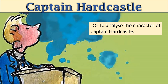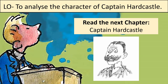Our learning objective today is to analyse the character of Captain Hardcastle. The first thing I need you to do is read the chapter titled 'Captain Hardcastle.' You can see a picture of Captain Hardcastle on this slide. In your copy of Boy, the chapter is there for you. I'd like you to place particular attention on the way that Captain Hardcastle is described and think about the language and structure techniques you can identify whilst reading. Pause this video now and read that chapter.